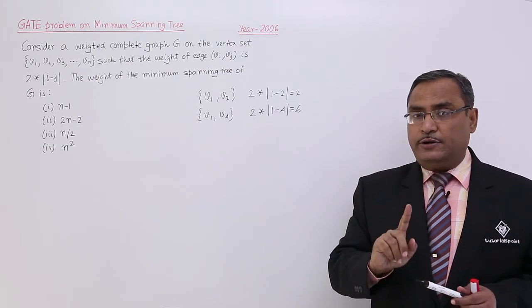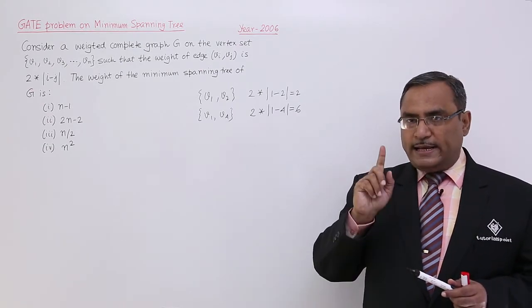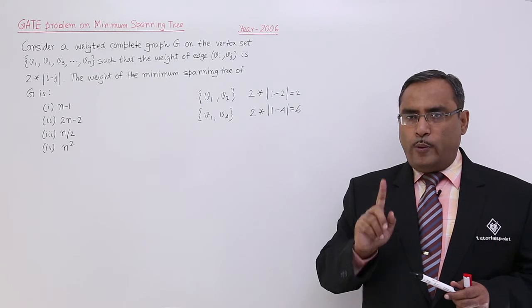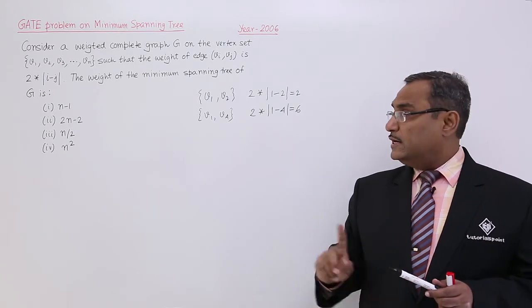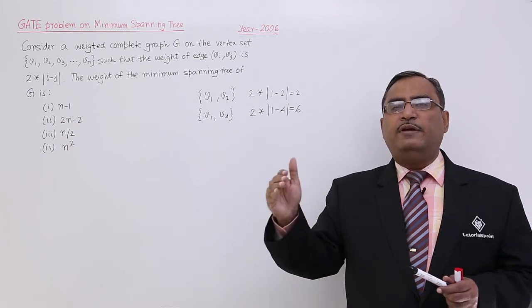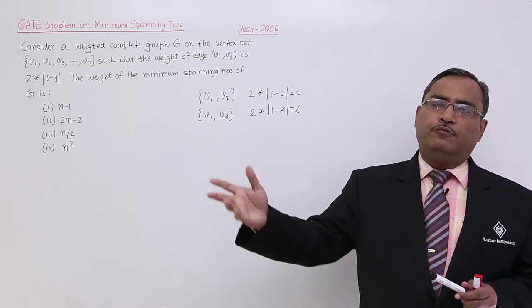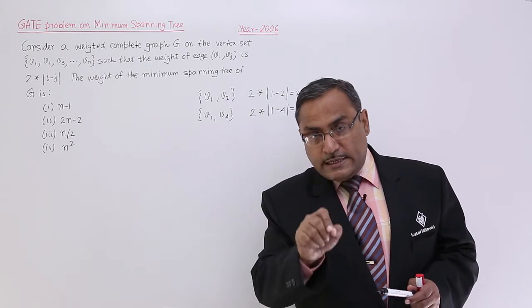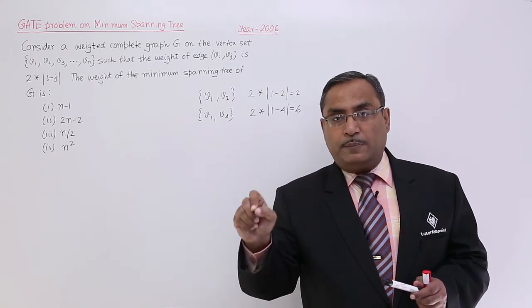But for the minimum spanning tree I should select those edges having the minimum weight value. That is why I should always go from V1 to V2, then V2 to V3, then V3 to V4, and so on up to Vn. For each of them, every time I am getting the weight of 2.